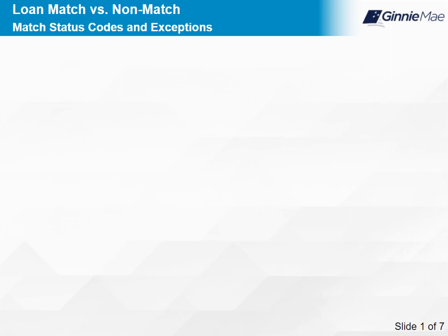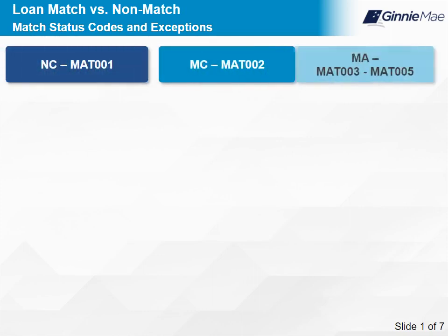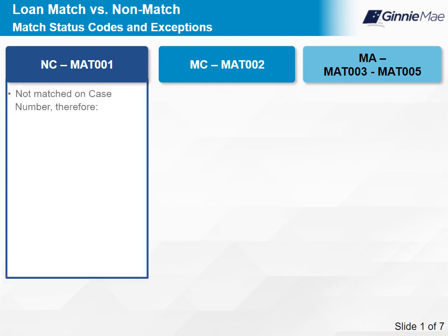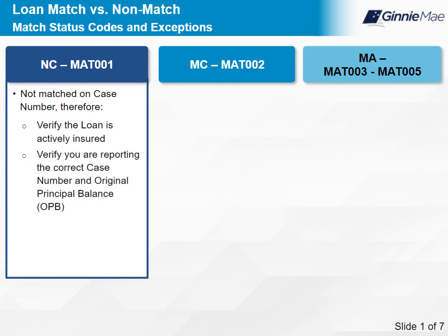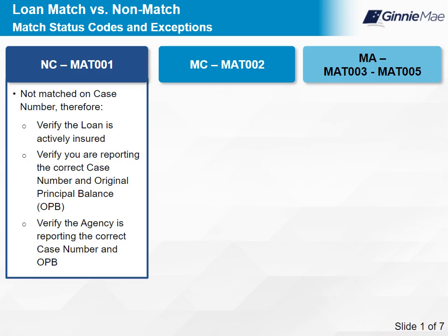Let's now review loan matching, starting with match status codes and the resolution for non-matches. When an issuer pulls the exception download, if there are any MAT exception alerts, they will display on the report. The issuer can only see the matching status codes when they download data from the MAS module. Match Status Code NC is connected to exception alert MAT001 — it is not matched on case number. Therefore, take the following actions: verify the loan is actively insured; verify you are reporting the correct case number and original principal balance (OPB); verify the agency is reporting the correct case number and OPB, and if not, have it corrected.